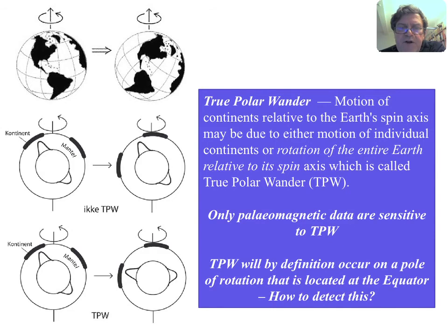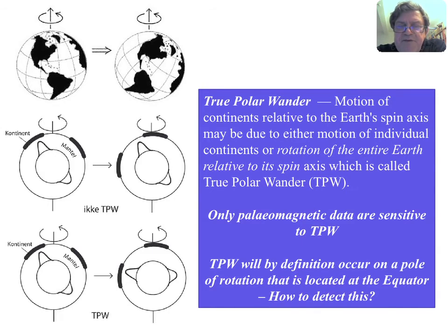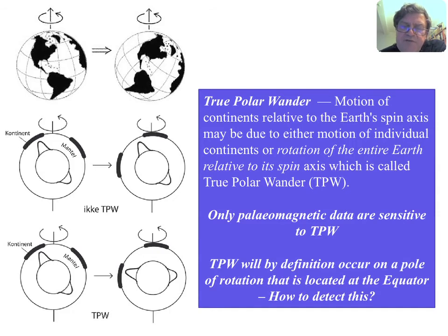Now I turn to the true polar wander correction, which matters when you want to relate surface motion to the mantle or compute net lithosphere rotation. Motion of continents relative to the spin axis may be due to either motion of individual continents (continental drift) or rotation of the entire Earth — lithosphere plus mantle — relative to its spin axis, which we call true polar wander (TPW). In 1954 Creer attributed the offset to TPW; in 1956 Runcorn said it was continental drift. We now know it is a combination of both, and we must figure out how much each contributes.